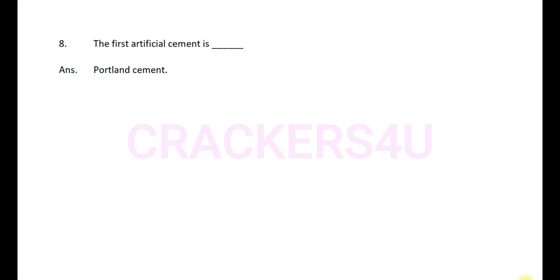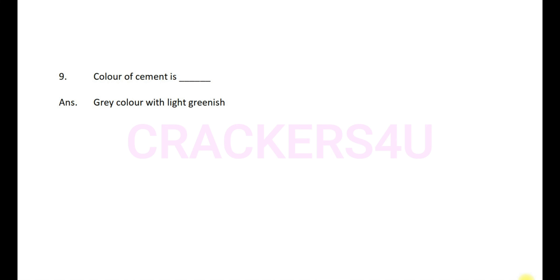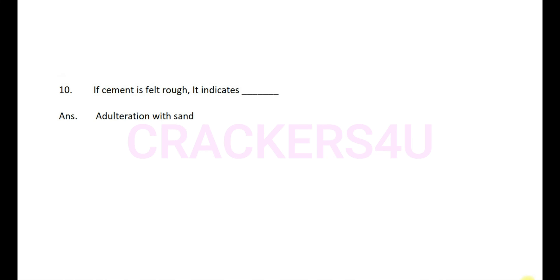Question 8: The first artificial cement is — answer: Portland cement. Question 9: The color of cement is — answer: gray color with light greenish tint.